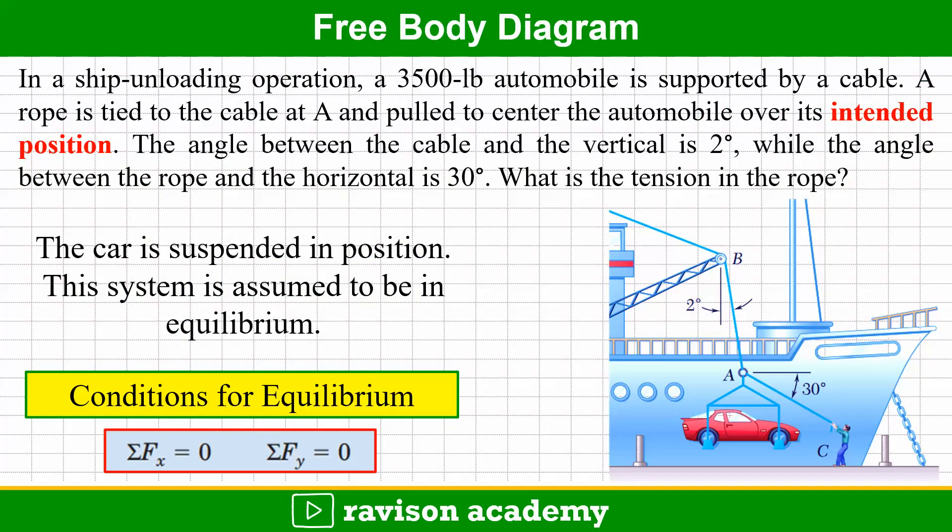In a ship unloading operation, a 3500-pound automobile is supported by a cable. A rope is tied to the cable at point A and pulled to the center of the automobile over its intended position. The angle between the cable and the vertical is 2 degrees, and the angle between the rope and the horizontal is 30 degrees. What is the tension in the rope?